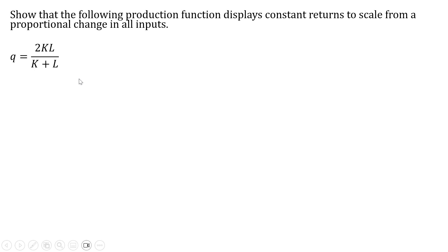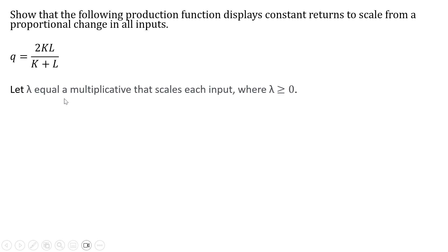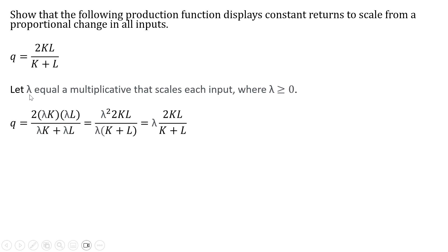Here's our production function. We're going to let lambda equal a multiplicative that scales each input, where lambda is greater than or equal to zero. So the first thing we're going to do is take our production function and multiply each input by lambda — lambda k, lambda l — and then in the denominator, lambda times k plus lambda times l.